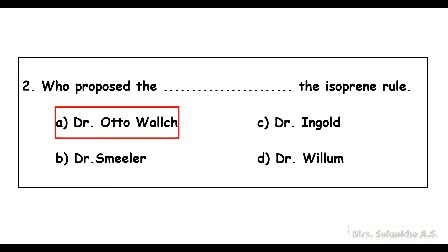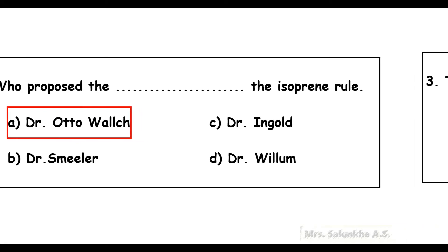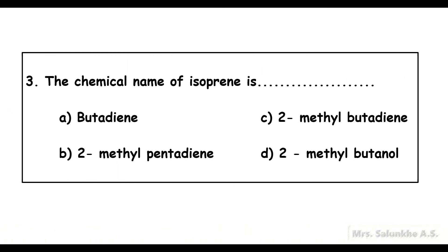Dr. Otto Walz. The chemical name of isoprene is 2-methylbutadiene.